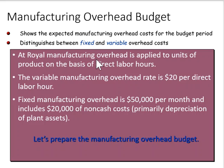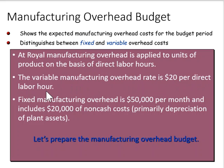At Royal, the manufacturing overhead is applied to units of product on a direct labor hours basis. They apply based on direct labor hours, and the variable manufacturing overhead rate is $20 per direct labor hour. Their fixed manufacturing overhead is $50,000 per month, which includes $20,000 of non-cash expenses.